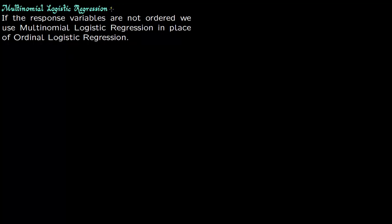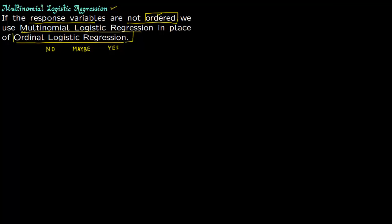In this lecture we talk about multinomial logistic regression. If your response variables are not ordered then we use multinomial logistic regression instead of ordinal logistic regression. For ordered responses, such as surveys that go from disagree to strongly agree, there is an order to them and you would use ordinal logistic regression. But if your response variables are not ordered, then you use multinomial logistic regression.